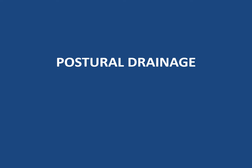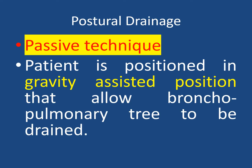Postural drainage relies on the effects of gravity to drain secretions from one or more lung segments to the central airways, where they can be removed via huffing or coughing techniques, or if needed via suctioning. It is a passive technique — we place the patient in certain gravity-assisted postures so that the bronchopulmonary tree can be drained. These positions allow gravity to bring secretions from the periphery towards the center.